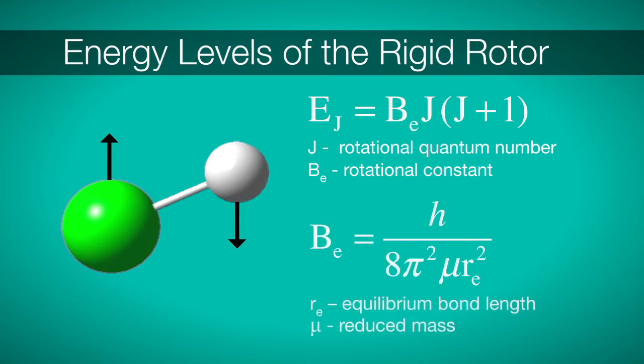The rotational constant contains useful structural information. In the case of diatomics, the rotational constant consists of the reduced mass mu and the equilibrium bond length R_e.